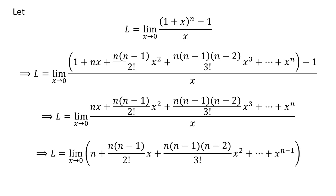We can see x is a common factor in every term of the numerator. So cancelling out the common factor x against the denominator x, we get L equals the limit of n + n(n-1)x/2! + ... and so on, as x approaches 0.